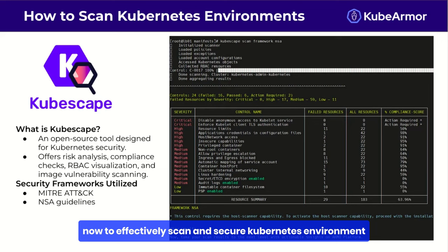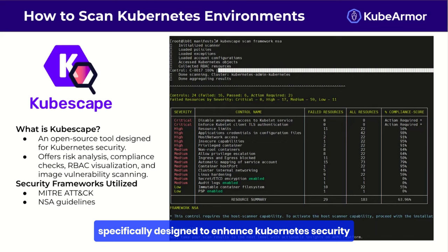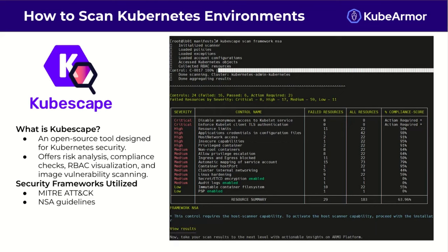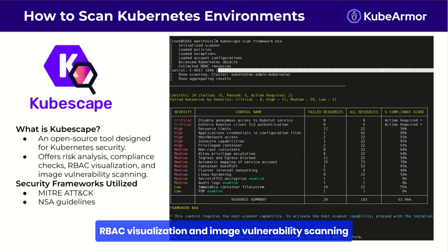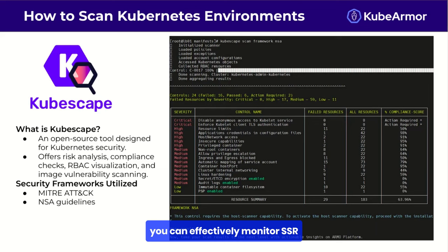To effectively scan and secure a Kubernetes environment, leveraging specialized tools is essential. One notable tool is KubeScape, an open source tool specifically designed to enhance Kubernetes security. It provides a comprehensive suite of features including risk analysis, compliance checks, RBAC visualization, and image vulnerability scanning. KubeScape integrates several well-regarded security frameworks like MITRE and NSA to guide its security assessments, allowing you to effectively monitor, assess, and enhance the security posture of your Kubernetes environment.